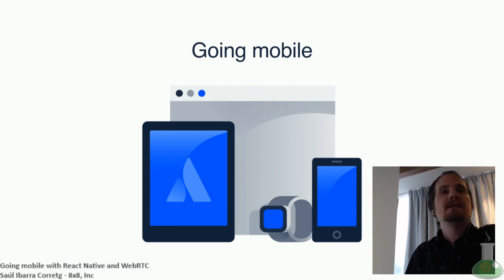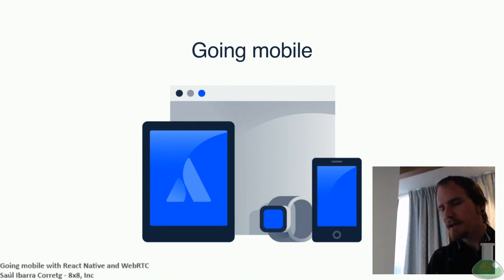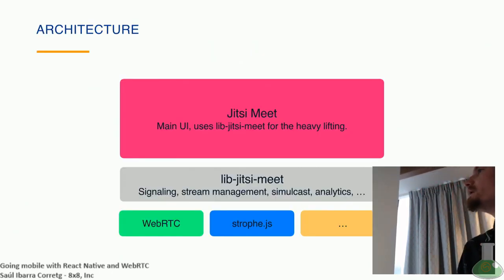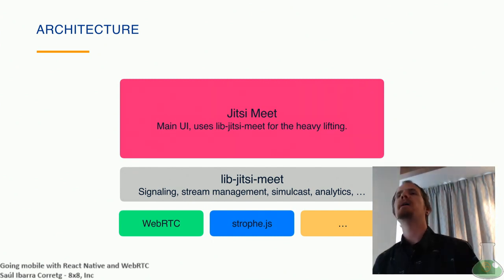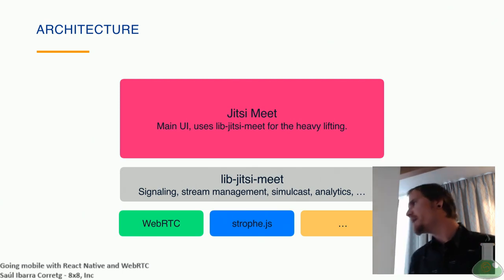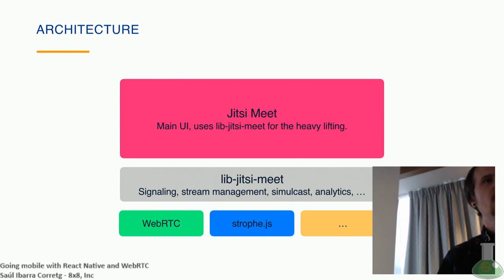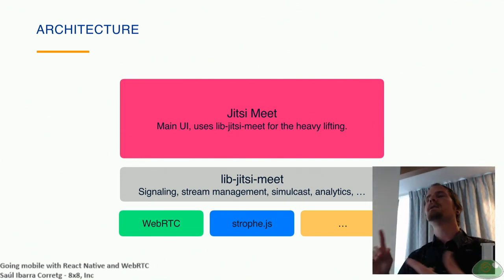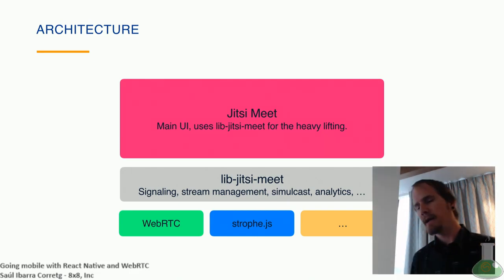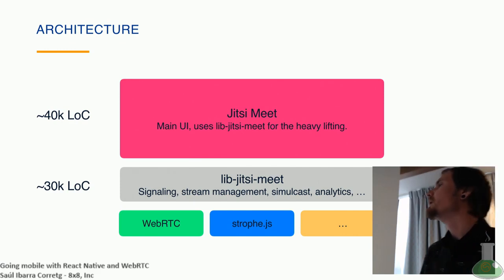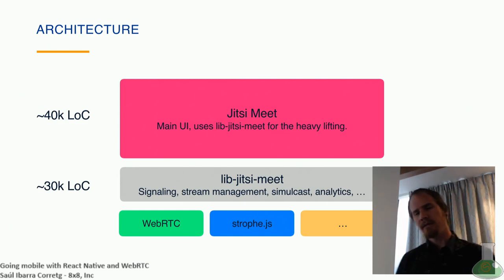Going mobile — it just started as an application on the web, and then at some point you want to go mobile because that's where things are happening these days. We looked at what we had in our architecture and at a very high level it's got these blocks. At the bottom we have WebRTC itself. We use Strophe.js because our signaling is XMPP based. On top of this we build LibJitsiMeet, our library that abstracts all the signaling, stream handling and everything so that you can build a GUI on top. And then we have JitsiMeet, which is the UI. JitsiMeet is around 40,000 lines of code and LibJitsiMeet is around 30,000 lines of code.